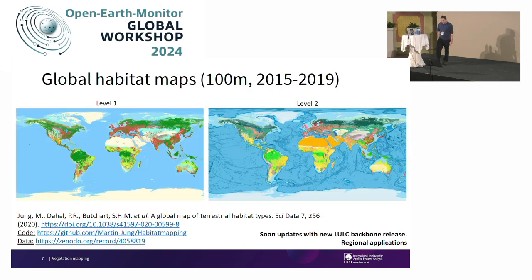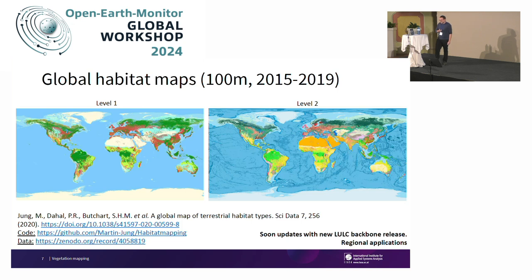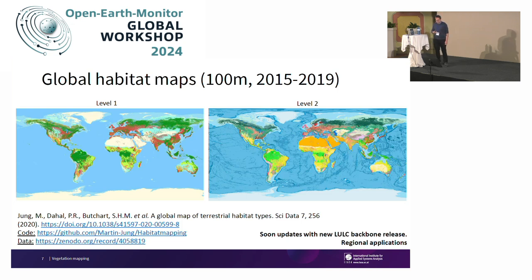All of this data is openly available and mapped at two different hierarchical levels. We have a level 1 layer and a level 2 layer, mapped at 100 meters and covering 2015 to 2019. The main limitation of 2019 was that the Buchon et al. data essentially stopped by then. But as I was informed, there is a new land cover backbone upcoming that will replace it, at which point I'm very happy to make an update for the existing habitat map.